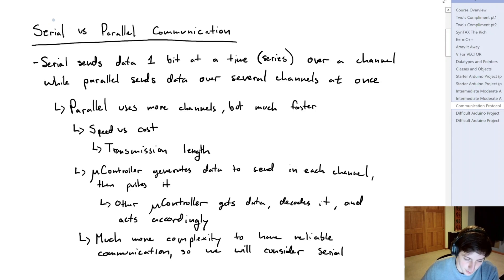So we have two options: serial communication and parallel communication. If we consider serial communication first, we're going to send data bit by bit sequentially over a single channel. While the opposing way for communication, the parallel option, is going to send data over several channels all at once. So the parallel communication way will use more channels, and what we recover from that is that we can send data at a much faster rate.